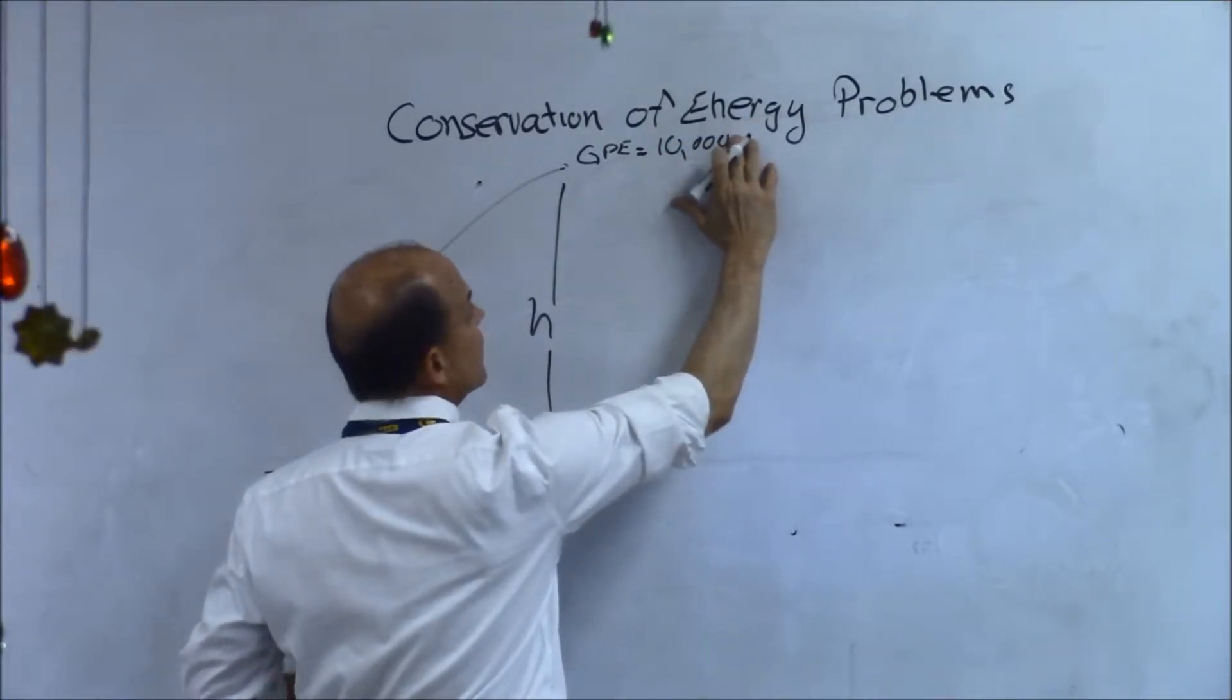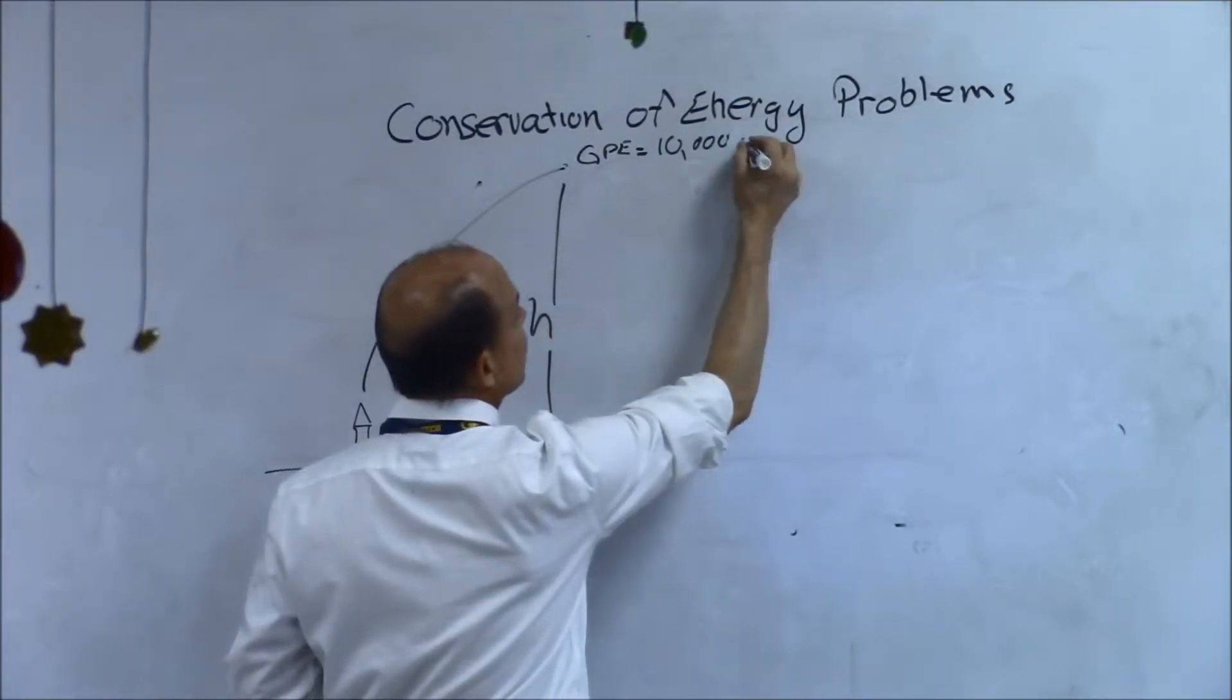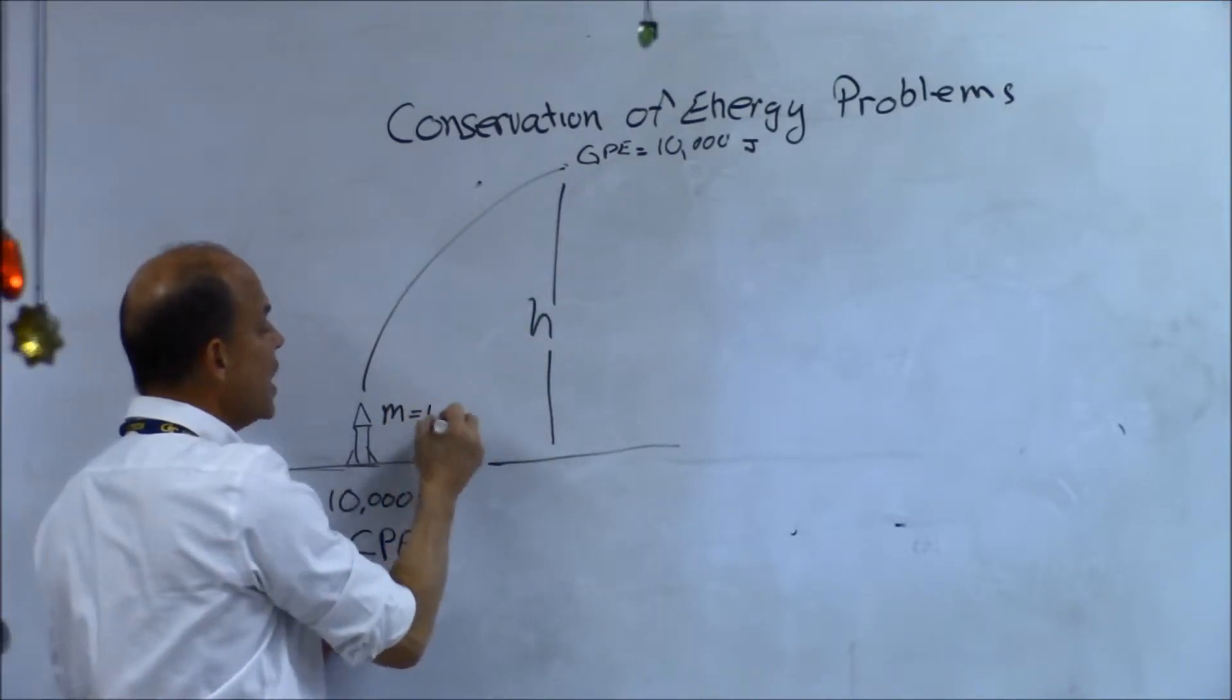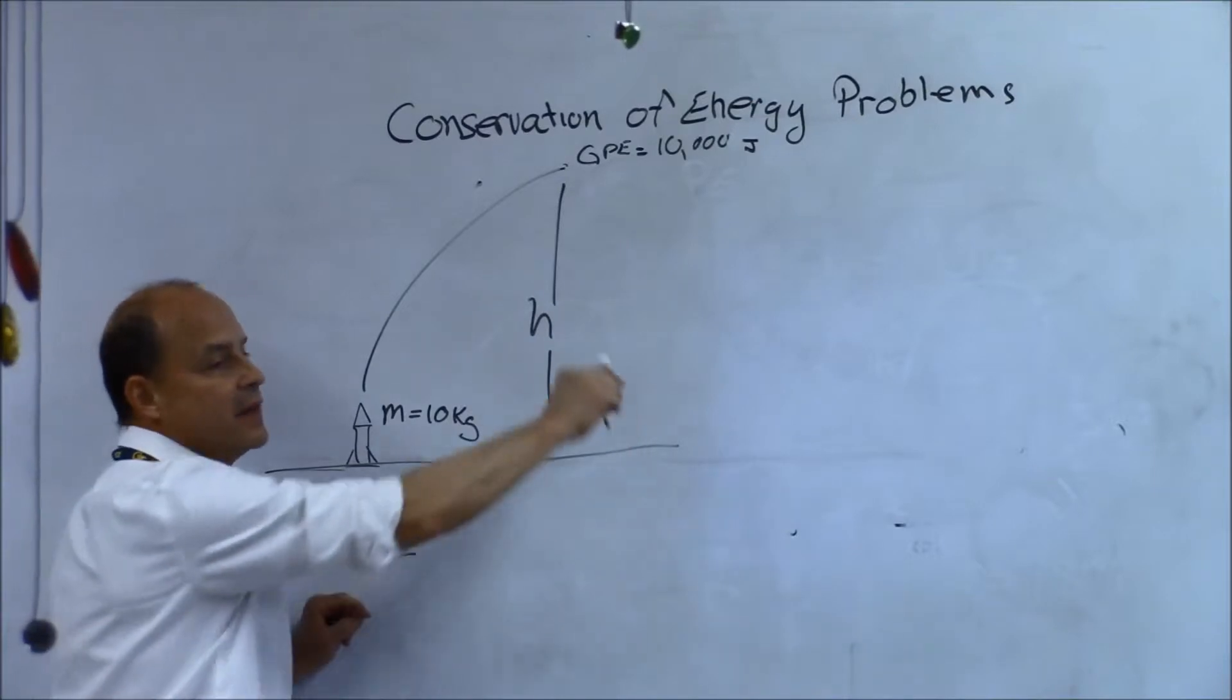If energy is conserved, then the CPE is going to turn into GPE. If I know what the GPE is and I know what the mass of the rocket is, can I find the height?